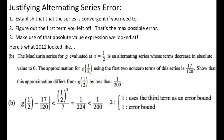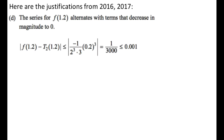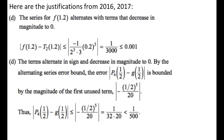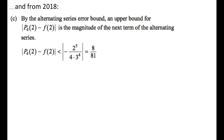In 2016, the solution showed the series alternates with terms decreasing in magnitude to zero, set up the absolute value expression, looked at the absolute value of the first term left off, and showed it was less than required. In 2017, same idea — show convergence, set up the absolute value expression, look at the first term left off. In 2018, you didn't need to show convergence, so it was just: 'by alternating series error bound, the upper bound for the absolute value of your estimate minus the actual value equals the magnitude of the next term.'